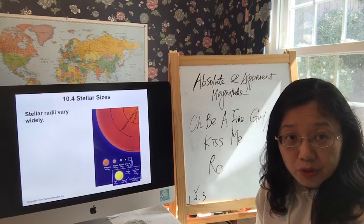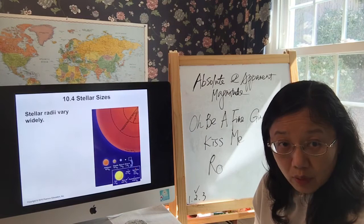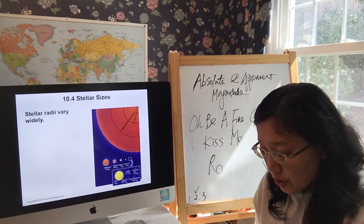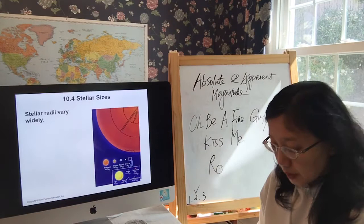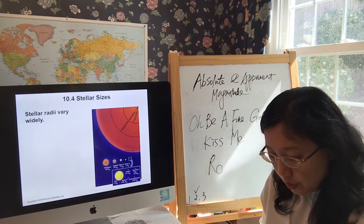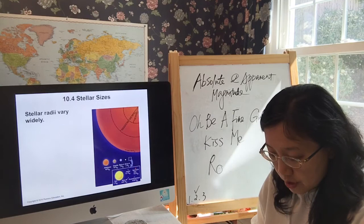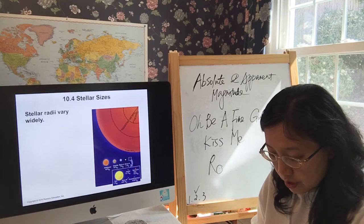For today's exercise, I want you to work on the worksheet posted on Blackboard named 'Luminosity, Temperature, and Sizes.' You only need to do Part 1, from question 1 through question 9 — you don't have to do Part 2. That's it for today.